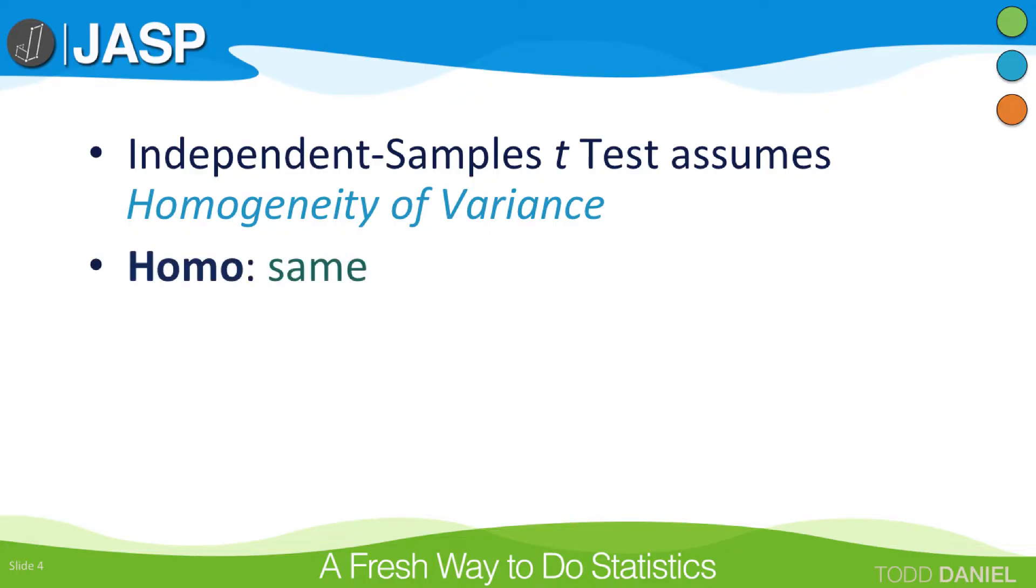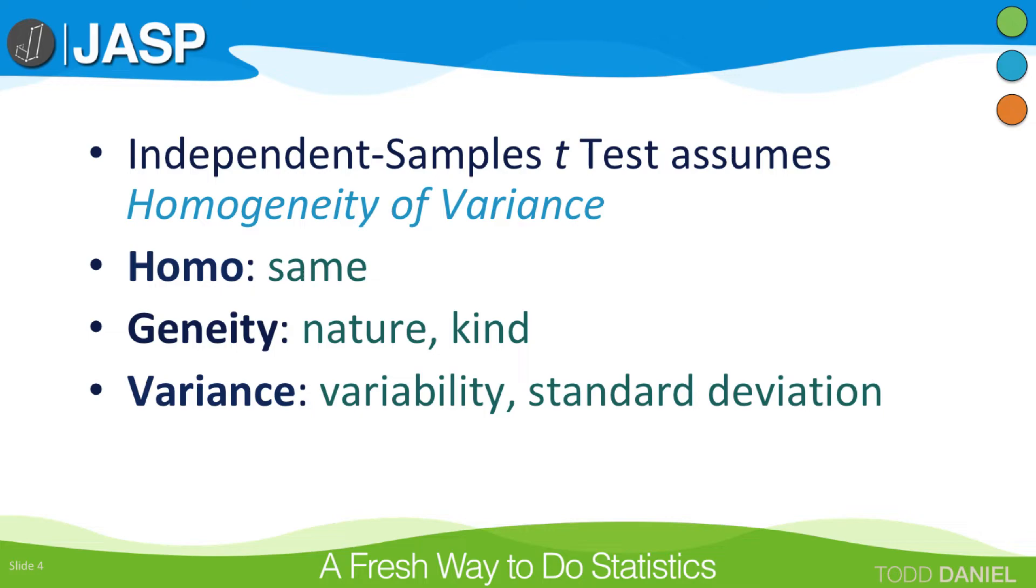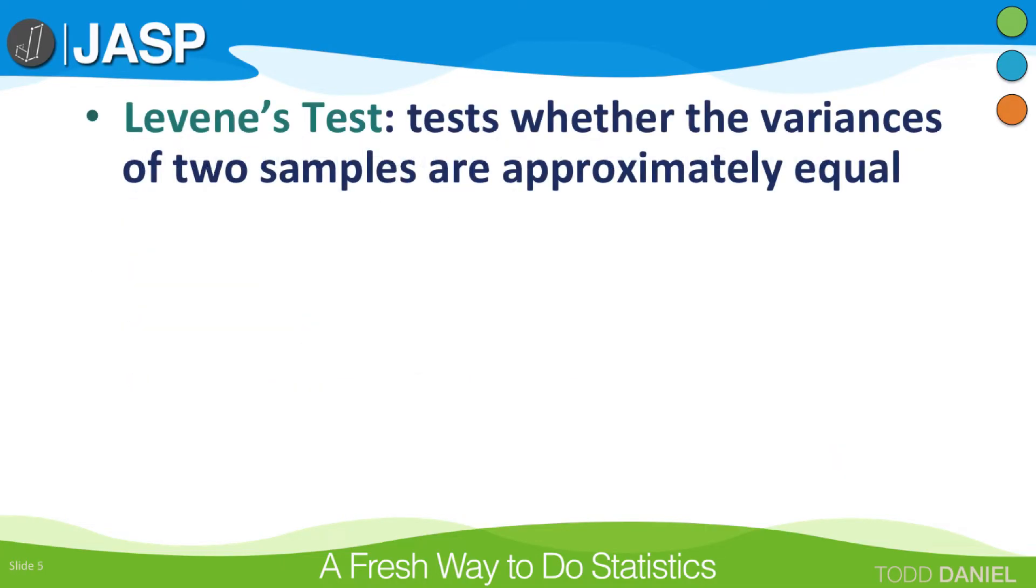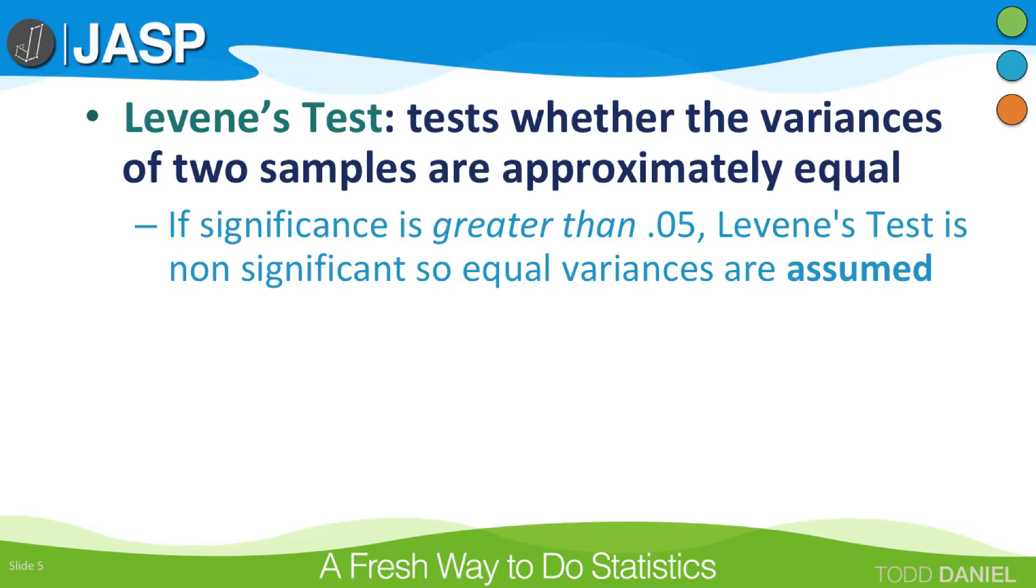Homo means same, and geneity refers to the nature of something. In this case, the something is the variance or the variability in the data. And remember that the square root of the variance is the standard deviation. So homogeneity of variance means that the variances in the groups is of the same nature, or they vary in the same way, or they have the same kind of variance. Levene's is testing whether the variances are equal, or rather approximately equal. They do not have to be exact, just close enough. That is the null hypothesis for Levene's. No significant difference between these two variances. If the p-value is greater than 0.05, then the Levene's test is non-significant. The variances do not differ, and the assumption has been met.